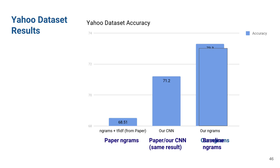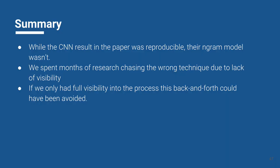What did we learn? The CNN was reproducible. They were able to do that, but the n-gram model wasn't. They did spend months of research tracking down wrong techniques because of the lack of visibility, the lack of transparency. This data was spread throughout email, repositories, and other methods, but also between companies. If they only had full visibility into the entire process, a lot of this back and forth and trial and error could have been avoided.